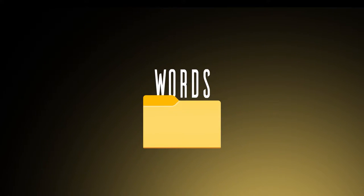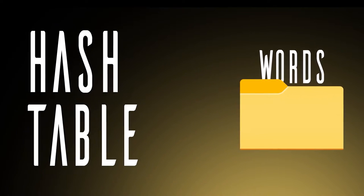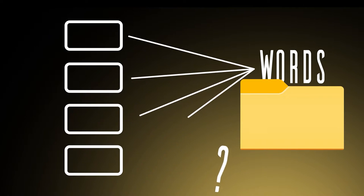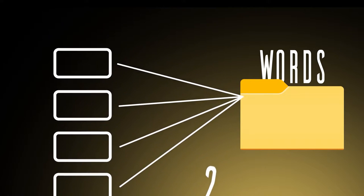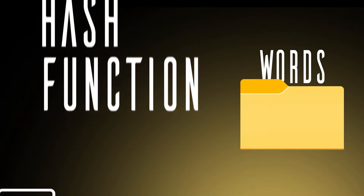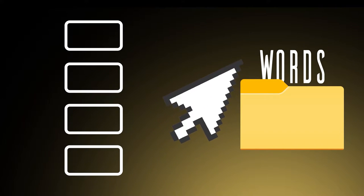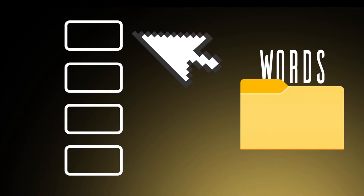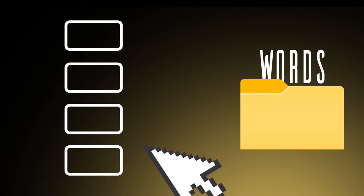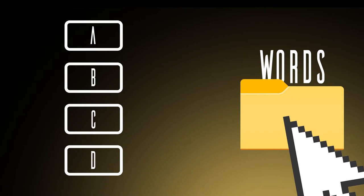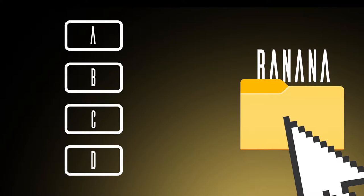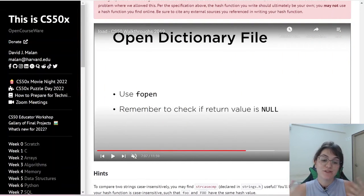When we open the dictionary file and store all the words in memory, we store them inside a hash table. A hash table is basically an array of linked lists. We determine which linked list to insert a word into based on a hash function — a function that takes a word as input and outputs the number corresponding to which bucket to store the word in, based on which letter that word starts with.